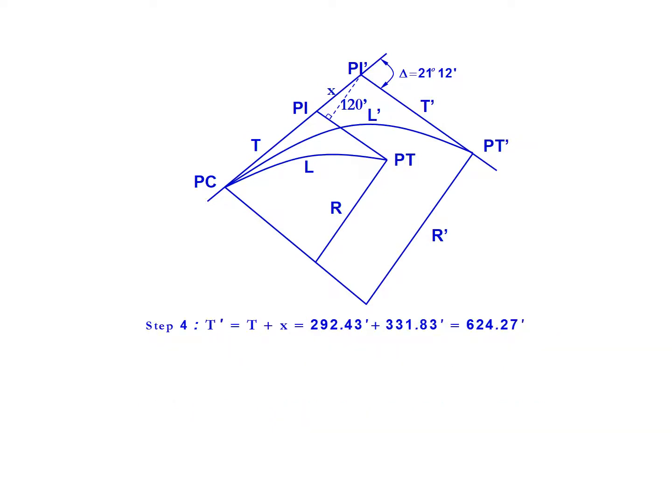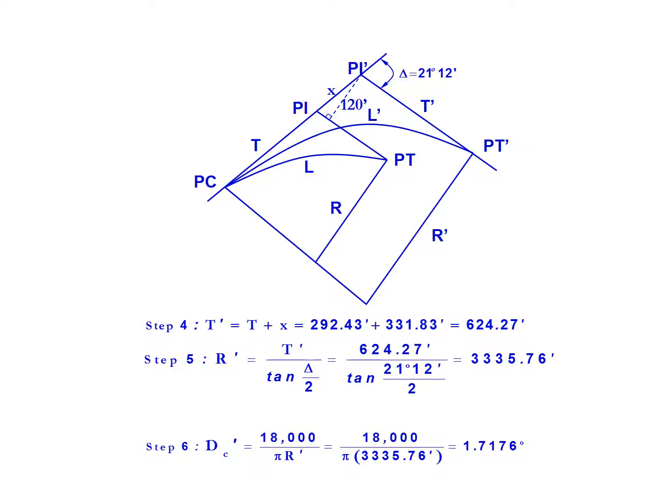Our next step, after calculating T prime of 624.27 feet, is to find the new radius R prime. That's T prime divided by the tangent of delta divided by 2. So 624.27 feet divided by the tangent of 21 degrees 12 minutes divided by 2 gives us a new radius of 3,335.76 feet for this curve after we offset that tangent.